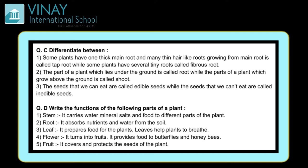Some plants have several tiny roots called fibrous roots — koi bhi main root nahi hota, usko hum fibrous root kehte hain. Second: root and shoot. The part of a plant which lies under the ground is called root, and the part of a plant which grows above the ground is called shoot. Plant ka jo part zameen ke neiche hota hai usko root, aur zameen ke upar hota hai usko shoot kehte hain.